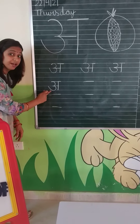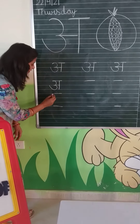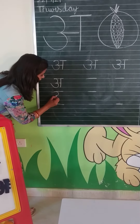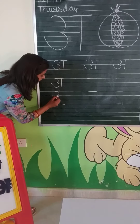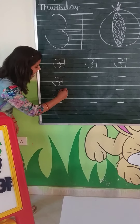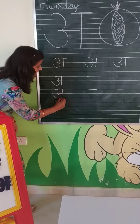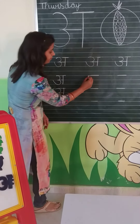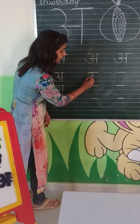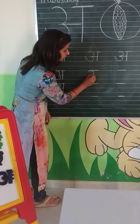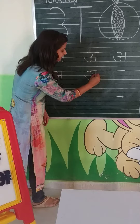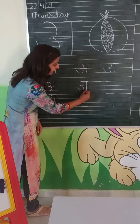Small curve and again small curve and sleeping line, then standing line. Up. And on. Curve, again curve, sleeping line, then standing line.